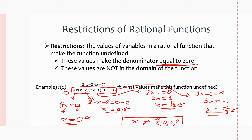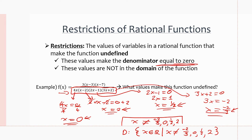If you're writing it as a domain, the domain is that x is an element of all real numbers, but x cannot equal −2/3, 0, 1/2, or 2 — they're not in the domain. And that means that there is a vertical asymptote at each of these x values, which we'll look at in the next couple of slides.